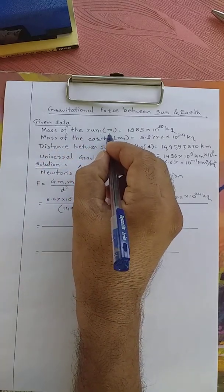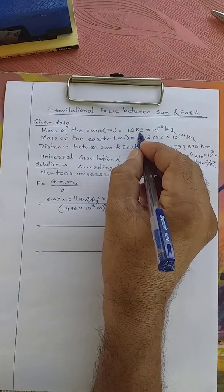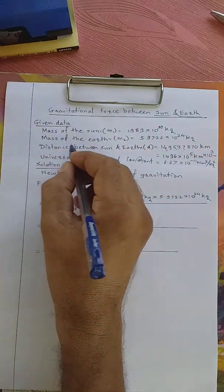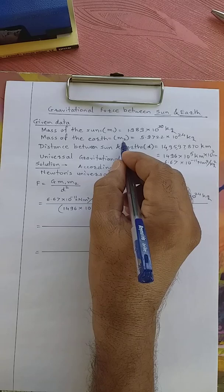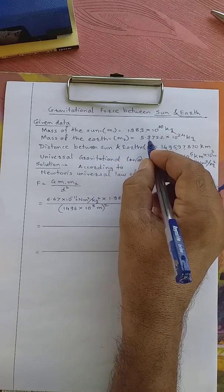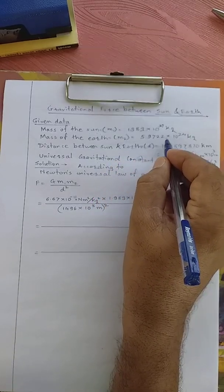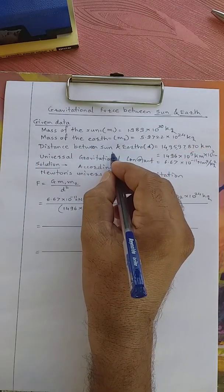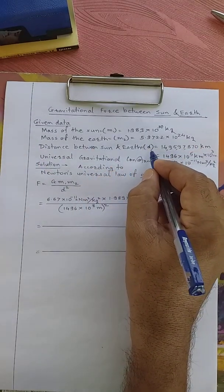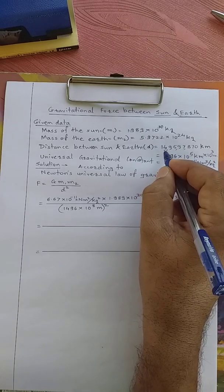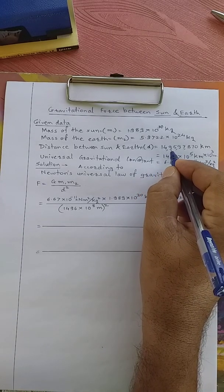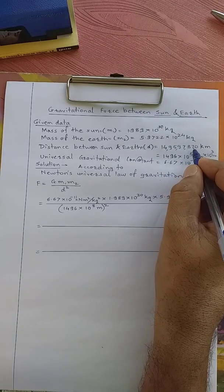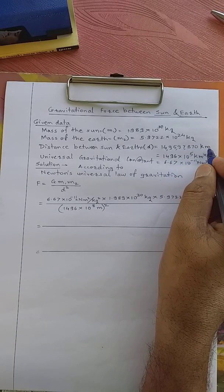Mass of the Sun M1 is equal to 1.989 into 10 raise to 30 kilograms. Mass of the Earth M2 is equal to 5.9722 into 10 raise to 24 kilograms. Distance between Sun and Earth is D is equal to 14 crore 95,97,870 kilometers.